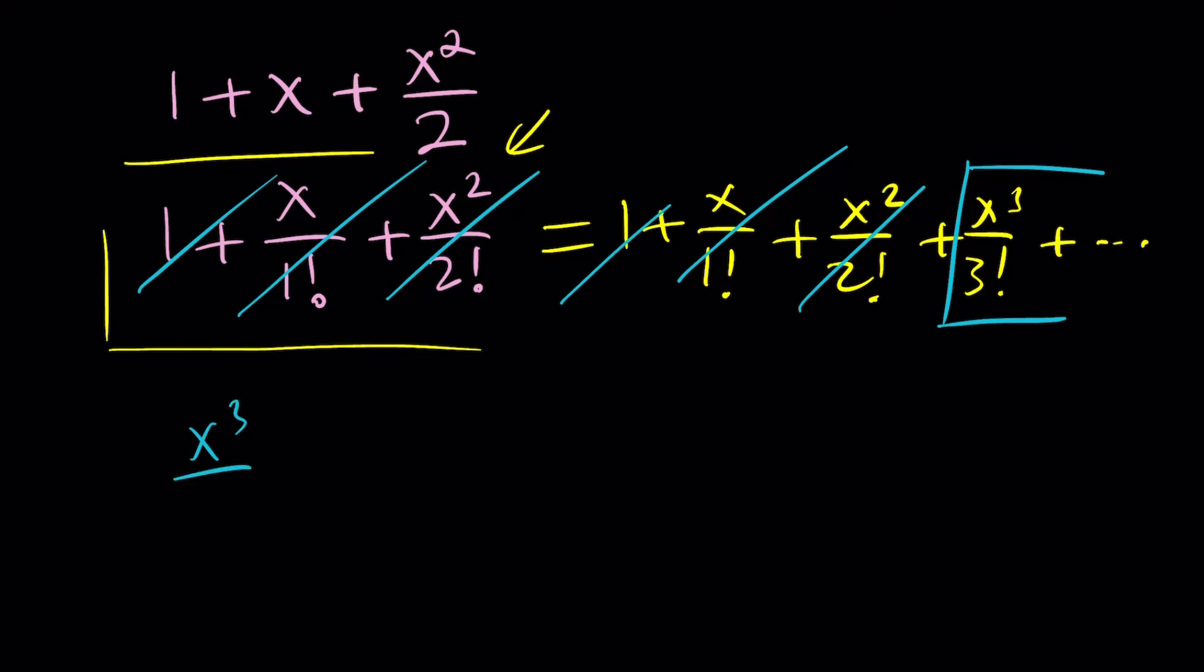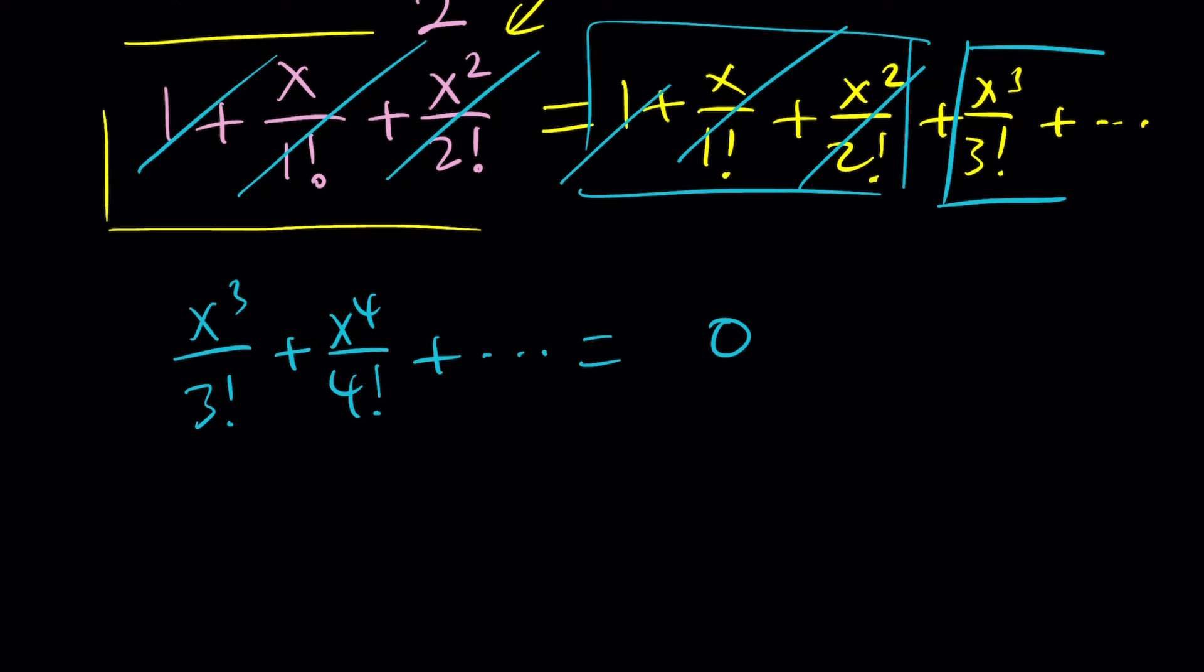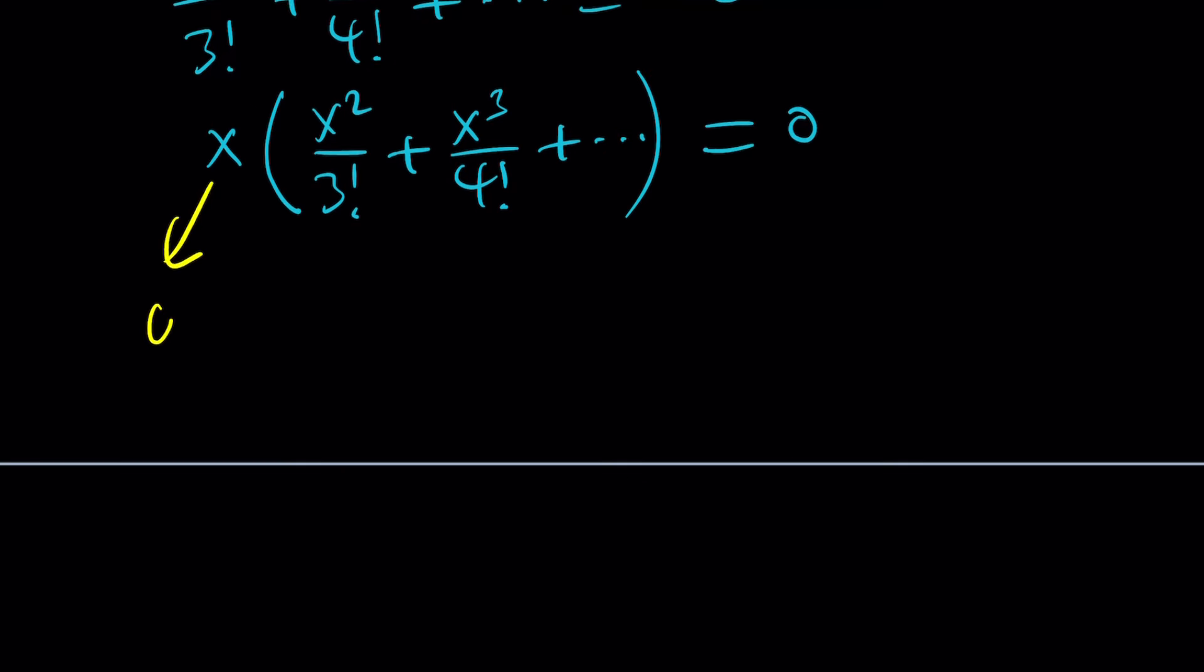Now, here's what we have. x cubed over 3 factorial plus x to the 4th over 4 factorial plus dot dot dot. But, this is, again, an infinite polynomial because we've only taken out a finite number of terms and the rest is still an infinite polynomial and that's going to equal zero. By the way, this equation can have infinitely many solutions, right? Because it's an infinite polynomial and obviously it has infinitely many complex solutions, sort of, right? And, but we can basically take out an x. That's going to give us x squared over 3 factorial plus x cubed over 4 factorial plus dot dot dot. And what happens is you get equal to zero. But, something interesting happens. From here, we get immediately x equals zero, right? Because it satisfies.